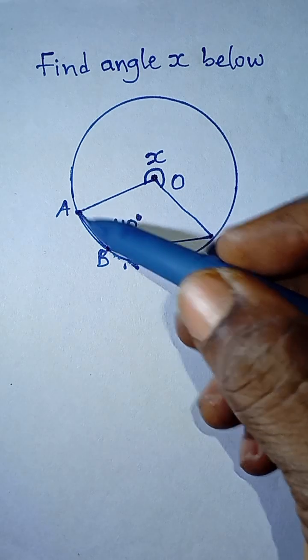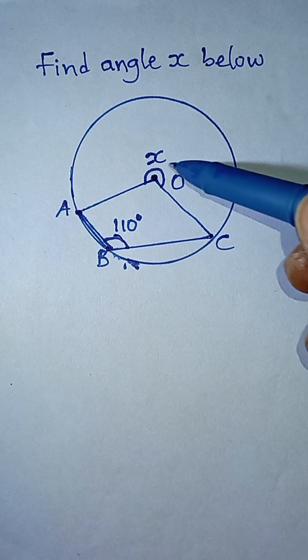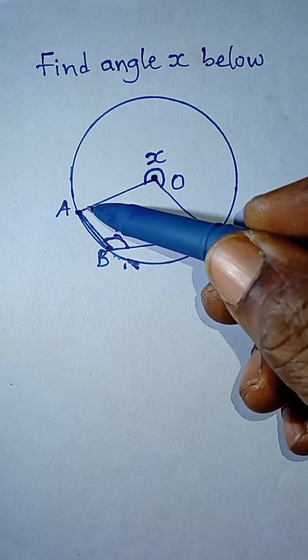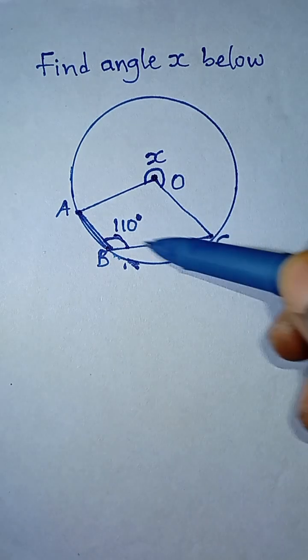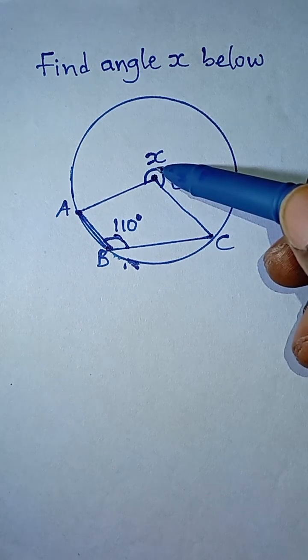So this shows that the angle formed at this circumference is related to the angle formed at the center. Don't forget the lines are all starting from A and C. So that means that the one that goes to the circumference relates to the one that goes to the center.